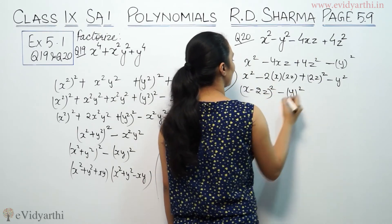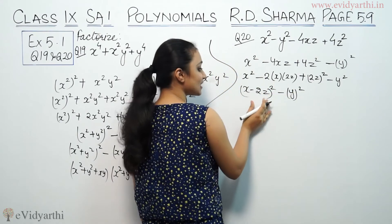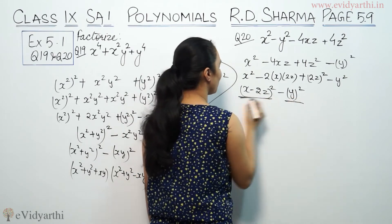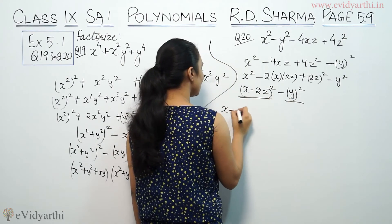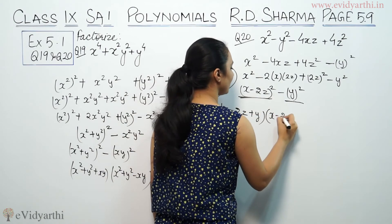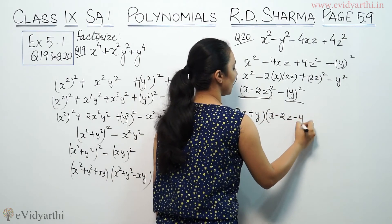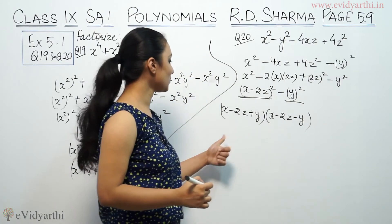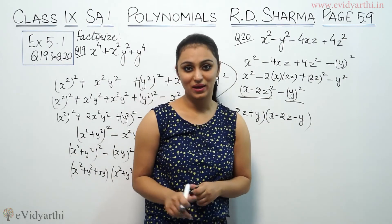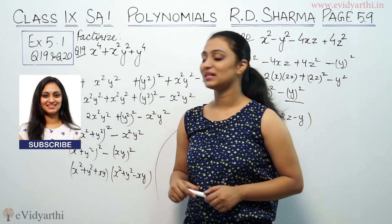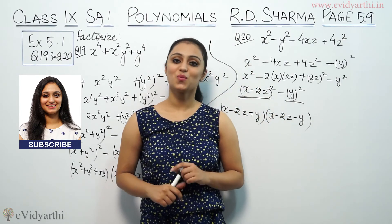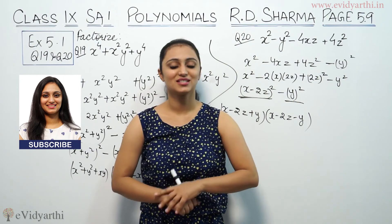This is of the form A² minus B², so we can write x minus 2z plus y times x minus 2z minus y. So that was question number 19 and 20 from RD Sharma. Do watch the next video for some more questions.